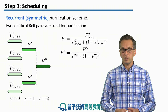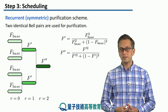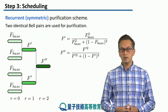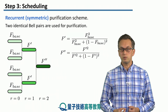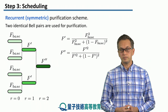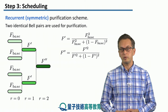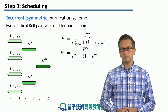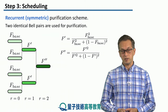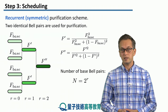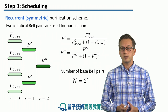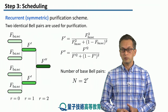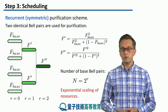We purify the second one to get the Bell pair of the same fidelity. And then we run our purification scheme again in the second round — r equals two — to get a new Bell pair of fidelity f_double_prime. And this way, we can keep increasing and boosting the fidelity, as we have seen in the previous section. The problem is that the number of base Bell pairs needed scales exponentially. So the total number is given by two to the power of r, the number of rounds.